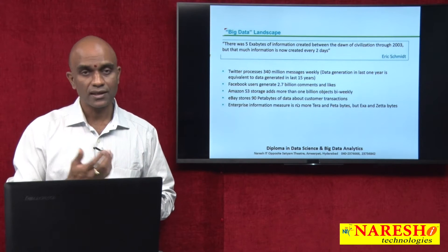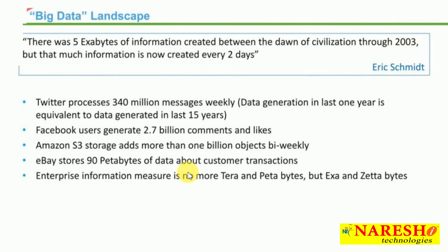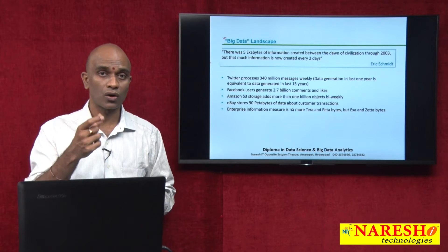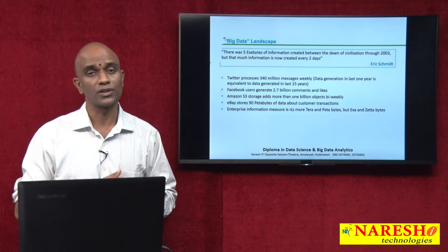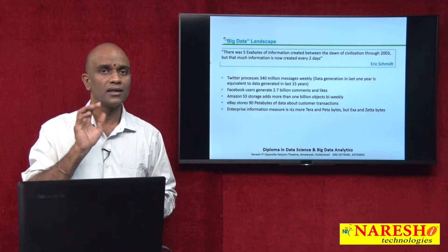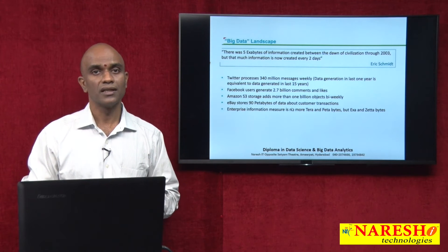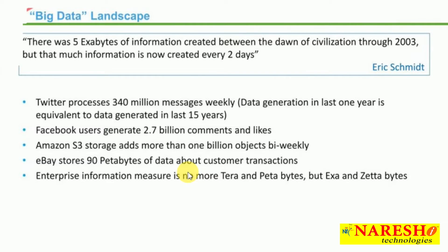Fundamentally, Big Data refers to the three Vs. Here is a quick example: Twitter processes about 340 million messages weekly. A couple of years back, database administrators might say their database grew from 1 GB to 500 GB by year end. But as of today, we can get multiple terabytes of data in a single day — an exponentially huge volume and velocity. Facebook has about 2.7 billion likes, and Amazon S3 is capable of storing about 1 billion objects a week. Today, data is no longer measured in GBs but goes beyond terabytes, petabytes, and zettabytes.